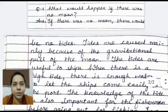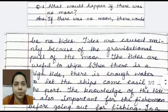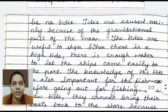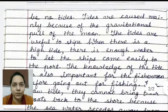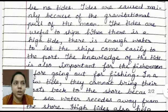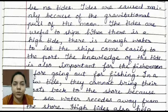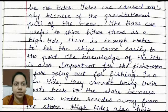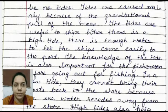Moon nahi hoota toh tides bhi nahi bante. High tide and low tide — woh moon ki wajah se hoota hai. Tides are caused mainly because of the gravitational pull of the moon. Moon ka jo gravitational pull hai, usi ki wajah se tides bante hai. The tides are useful to ships — unki liye tides bahut important hai.